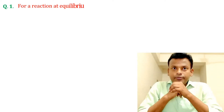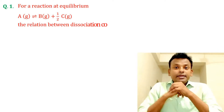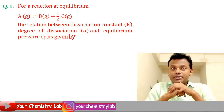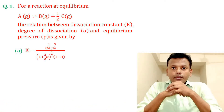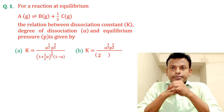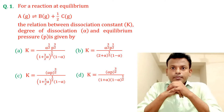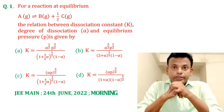Question number one: for a reaction at equilibrium, gas A gives B plus half C gas. The relation between the dissociation constant, degree of dissociation, and equilibrium pressure is given by options A, B, C, and D. This question was set in JEE Main 24th June 2022 morning shift.